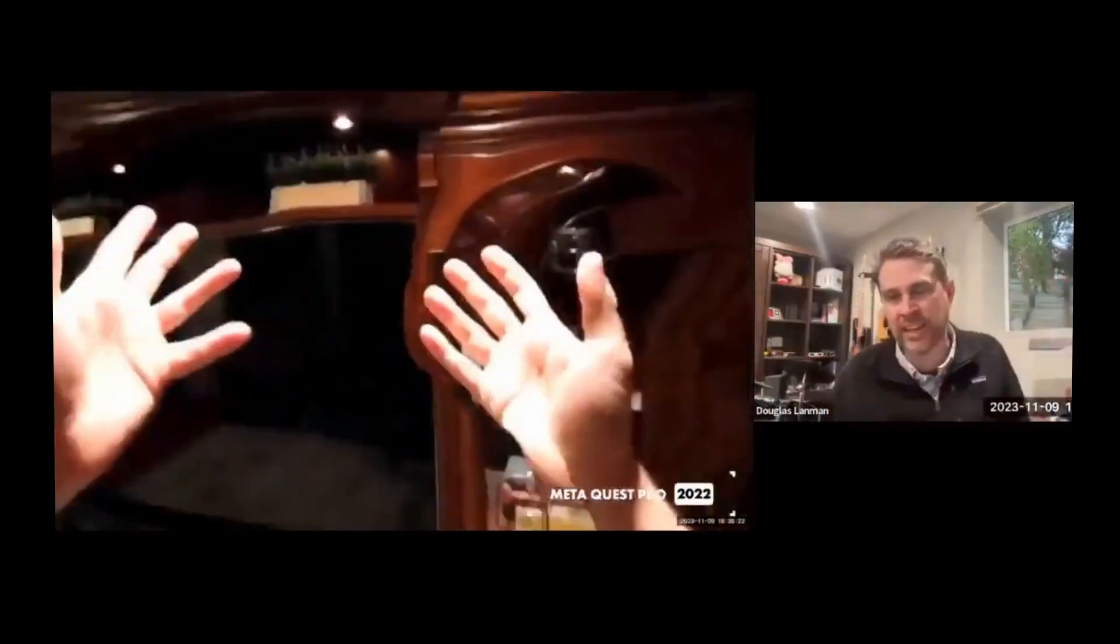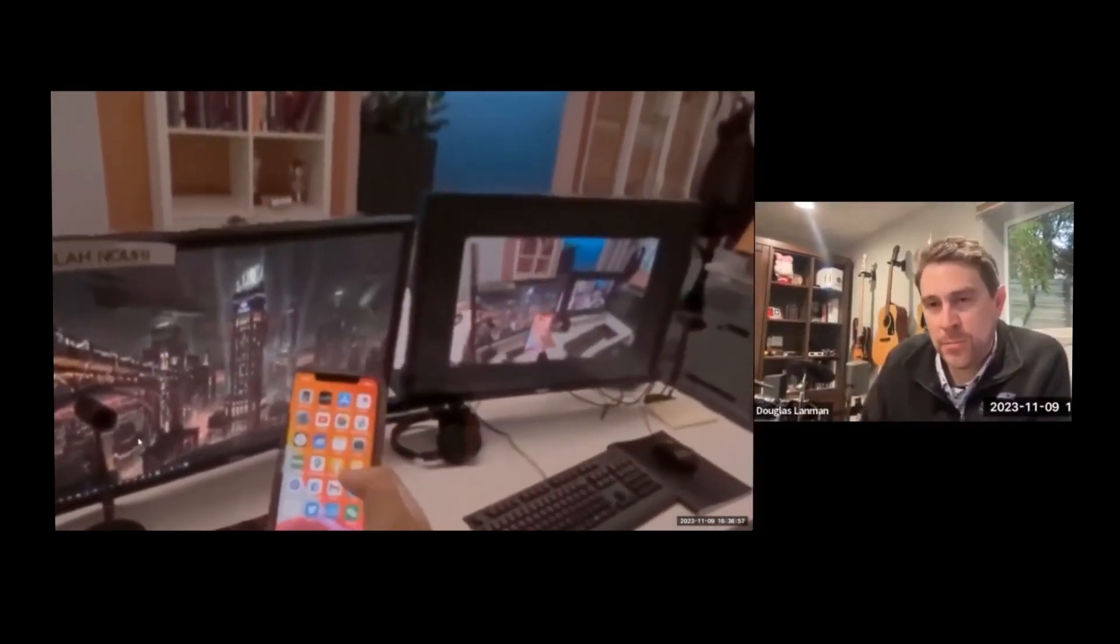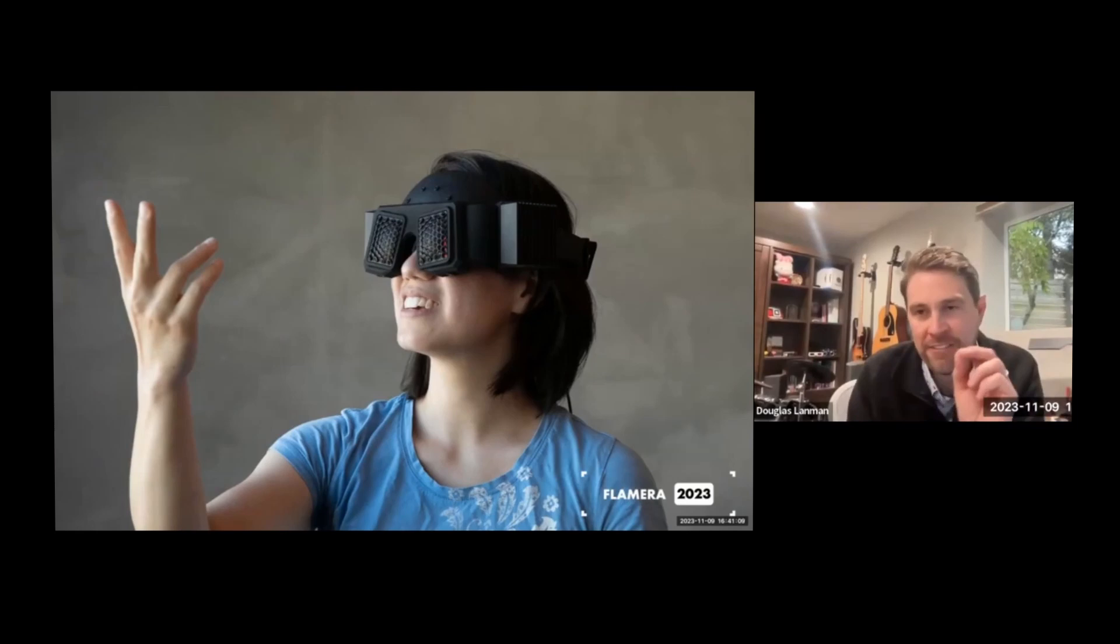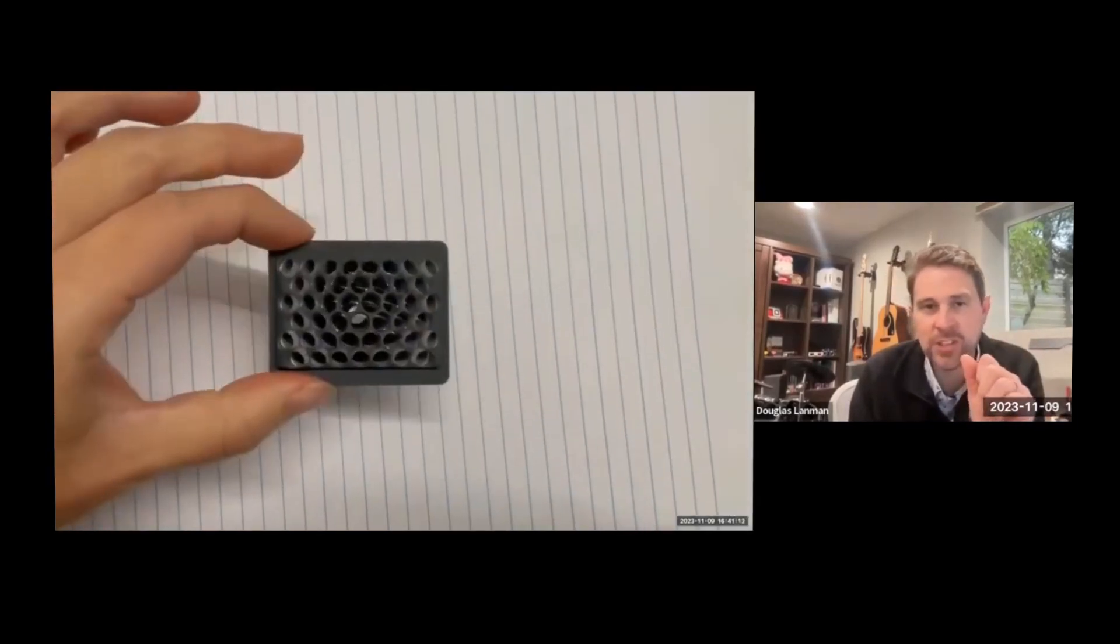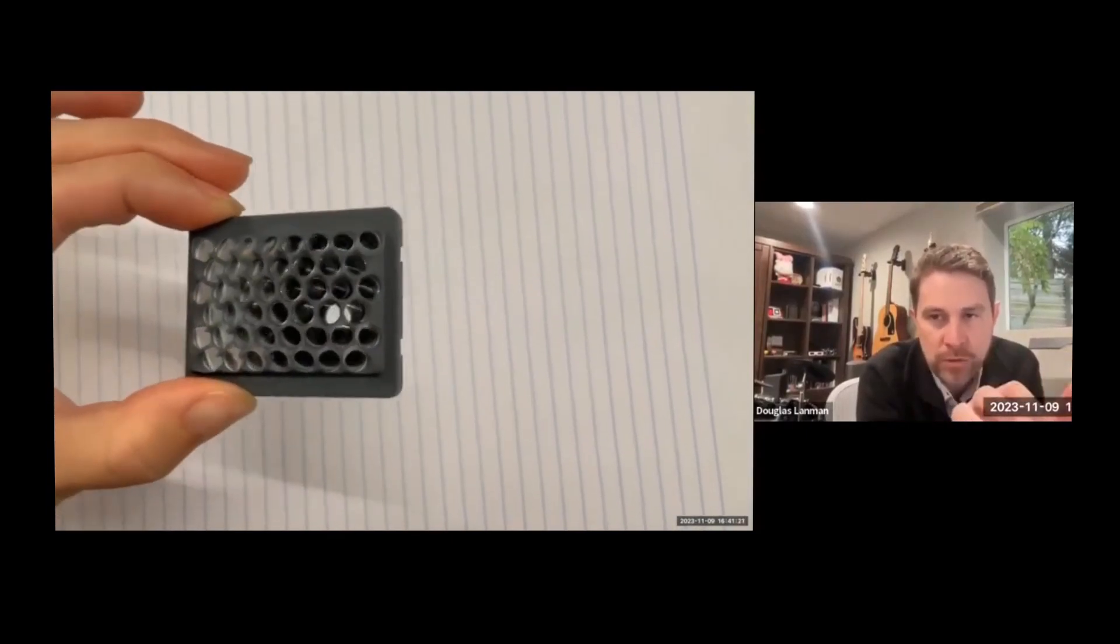This is real-time AI pass-through, a more accurate representation with little to no distortion. And this led to the Flamera prototype, which this honeycomb looking design is actually a perspective correct camera. So no distortion at all.